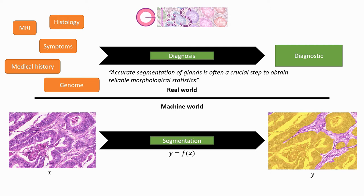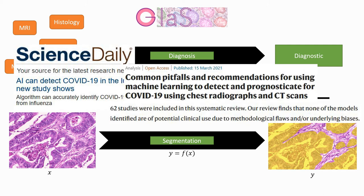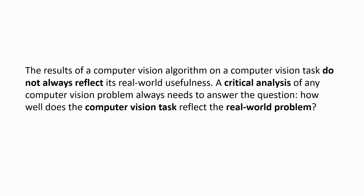This distinction is really important, because it's at the base of many incorrect reporting of deep learning results. Very often we see headlines claiming that AI is better than human experts at performing some task. But that task is usually the narrow machine-world task specifically designed to be solvable by a machine. Usually, this AI doesn't even attempt to resolve the underlying real-world problem, and therefore can't be said to be better than humans at it. The results of a computer vision algorithm do not always reflect its real-world usefulness.